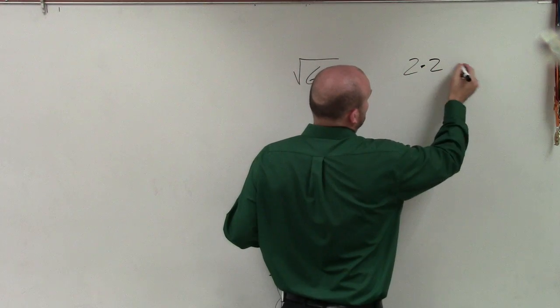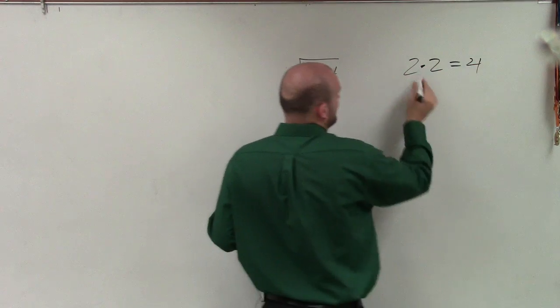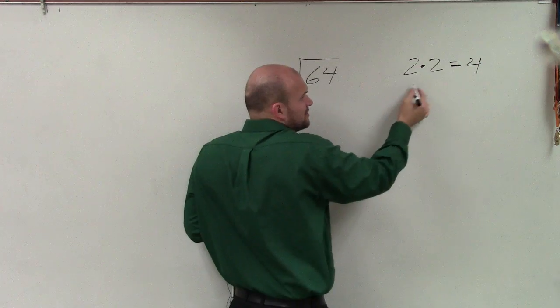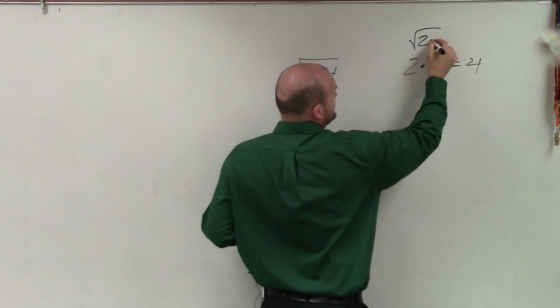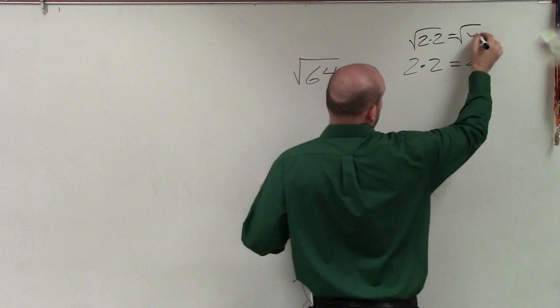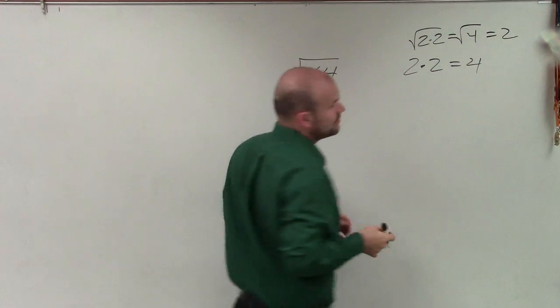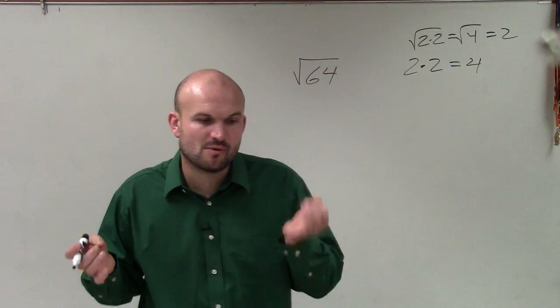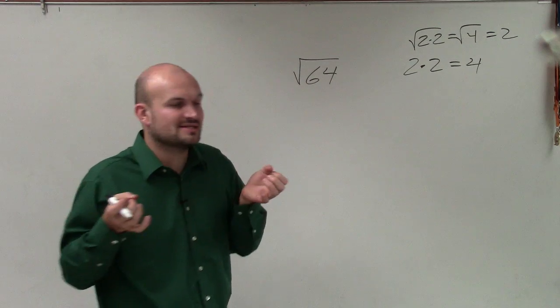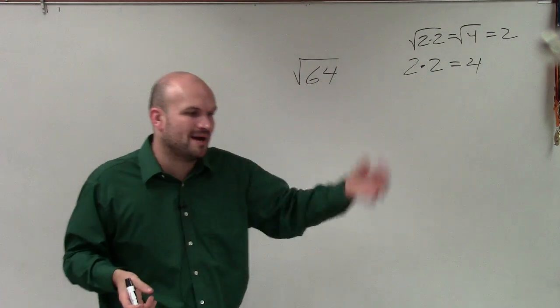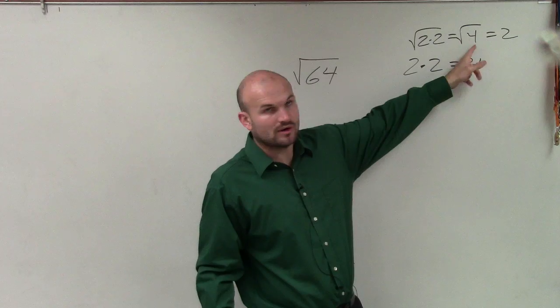So if I did 2 times 2, that equals 4. Remember, the reason we're talking about 2 times 2 is because the square root of 2 times 2 equals the square root of 4, which equals 2. When we're taking the square root of a number, the square root is the number that you multiply by itself to give you 4, which is 2.